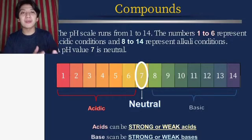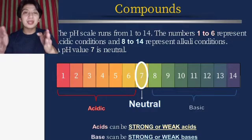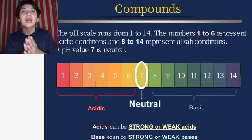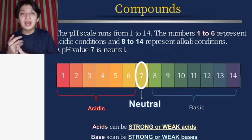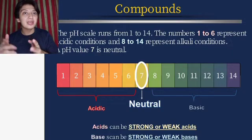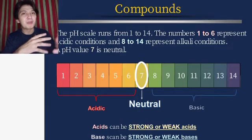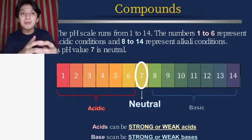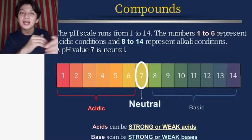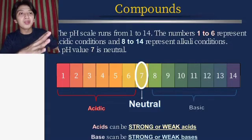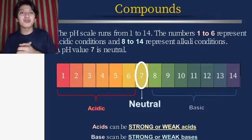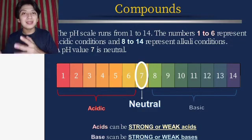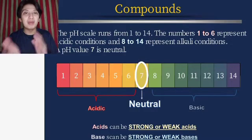The pH scale runs from 1 to 14: 1 to 6 is acidic, and 8 to 14 is basic. Strong acids fall in the range of 1 to 3, while weak acids are around 4 to 6.9. Weak bases are around 8 to 10, and strong bases are from 11 to 14. Always remember: we have weak acids, strong acids, weak bases, and strong bases.